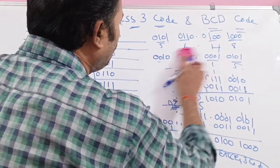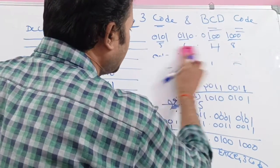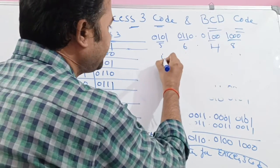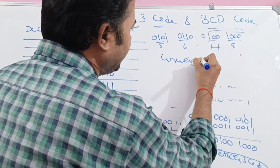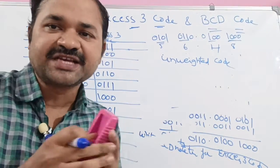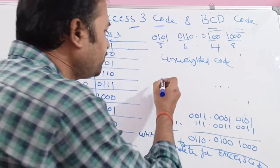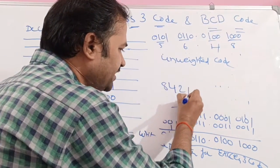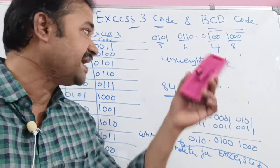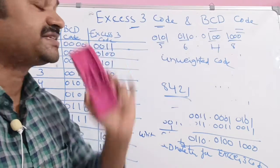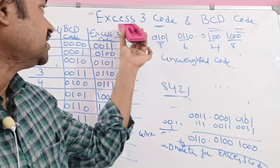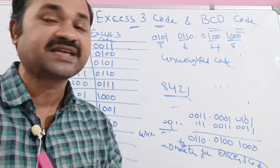One more important point: XS3 code is also called an unweighted code. In BCD notation using 8421, each bit position is associated with a specific weight (8, 4, 2, or 1). However, in XS3 code, the bits are not associated with any fixed weight, which is why XS3 code is also called an unweighted code.